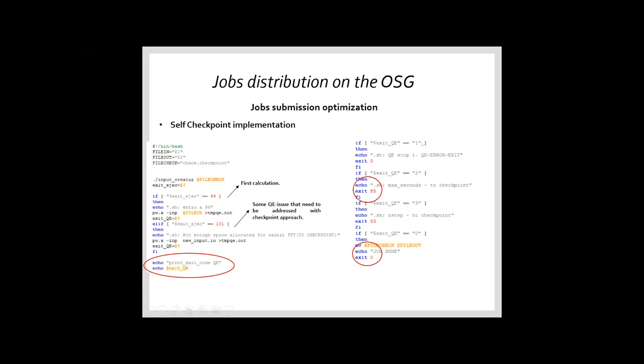Then we know that the Quantum Espresso exit code with the number one means there are some error exits. So that exit will be handled like the job goes out and it doesn't make a checkpoint.